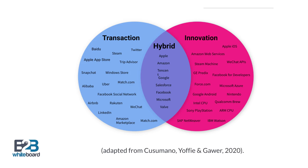The third type of digital platform combines elements of transaction and innovation platforms within the same platform infrastructure. To conclude, digital platforms come in a variety of shapes and sizes and are very disruptive business models.